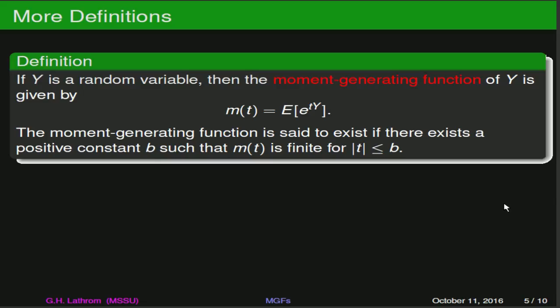Now we come to something that will really be a workhorse for us in our discussion of families of distributions — and that's the moment-generating function. If y is a random variable, then the moment-generating function of y is a new function of a new variable t, and what it is, is the expected value of e to the ty. The moment-generating function is then said to exist if there's a positive constant b such that the moment-generating function is finite for the absolute value of t less than or equal to b.